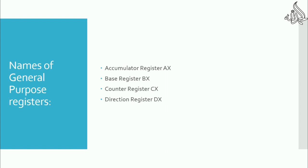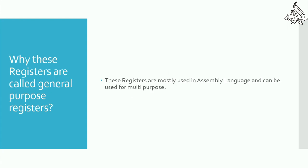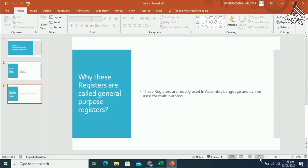These four are the basic general purpose registers that can be used in assembly language, whether it is x86, 8051, or whatever. So that covers today's video. Thanks for watching — don't forget to subscribe and press the like button.